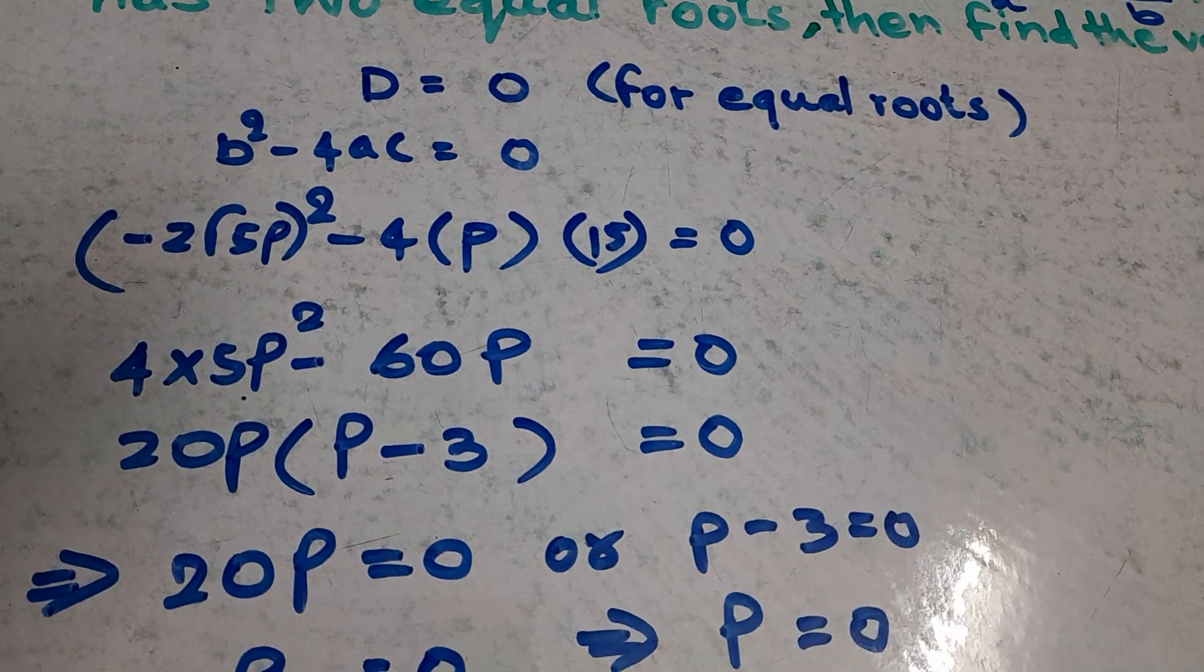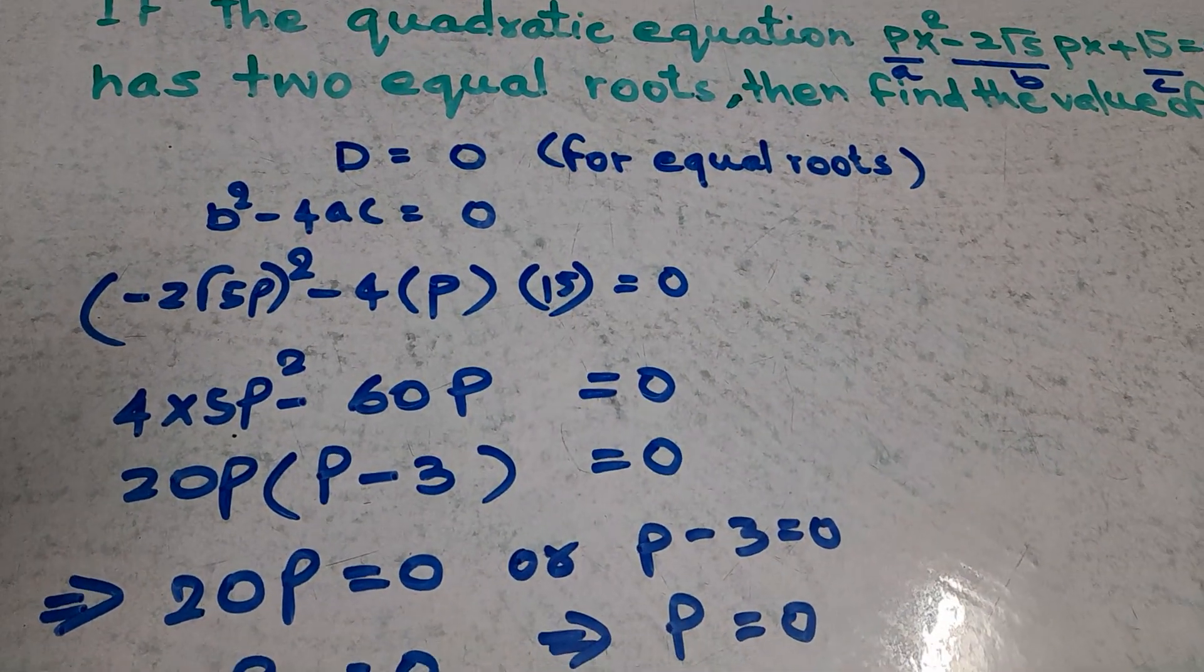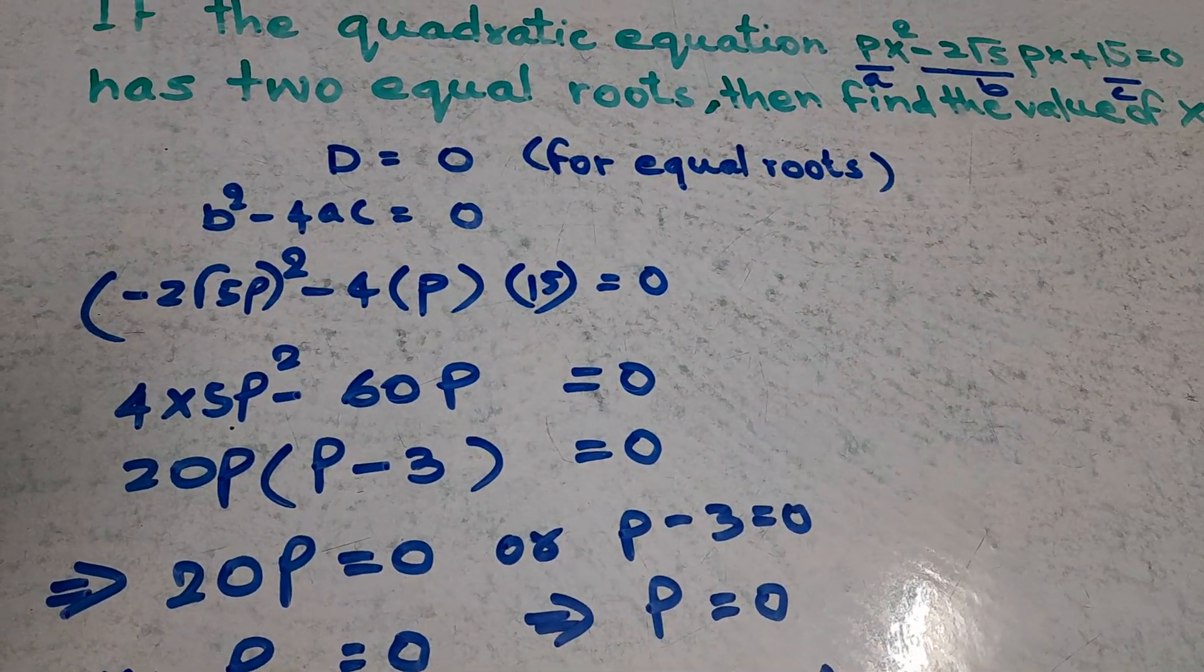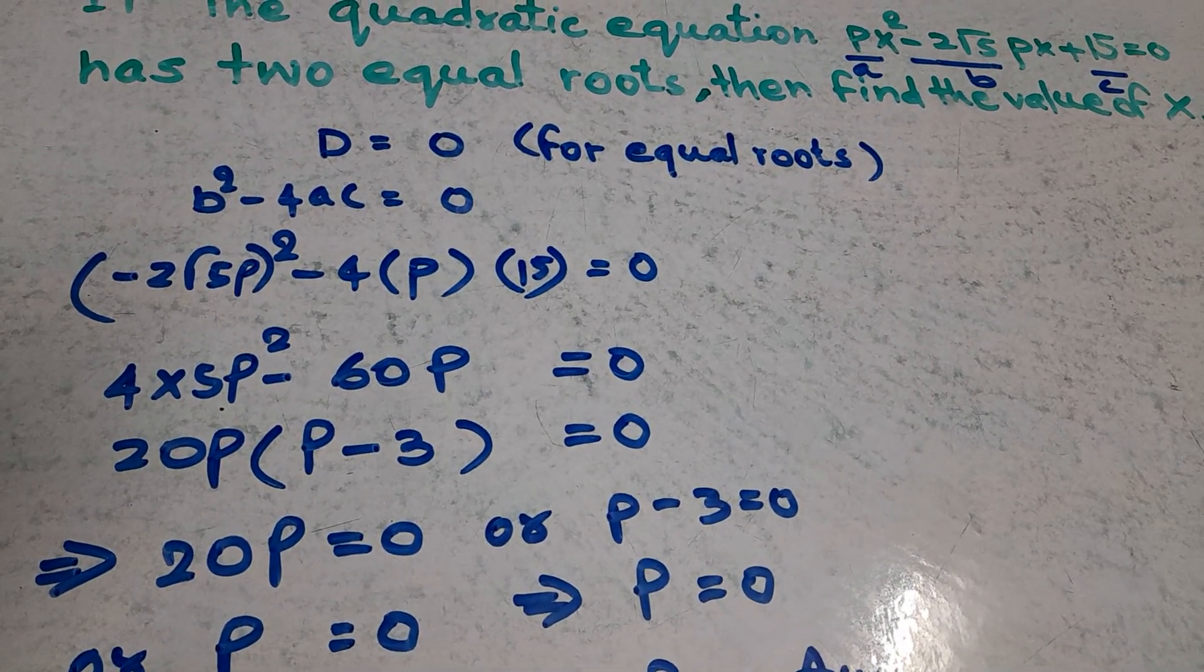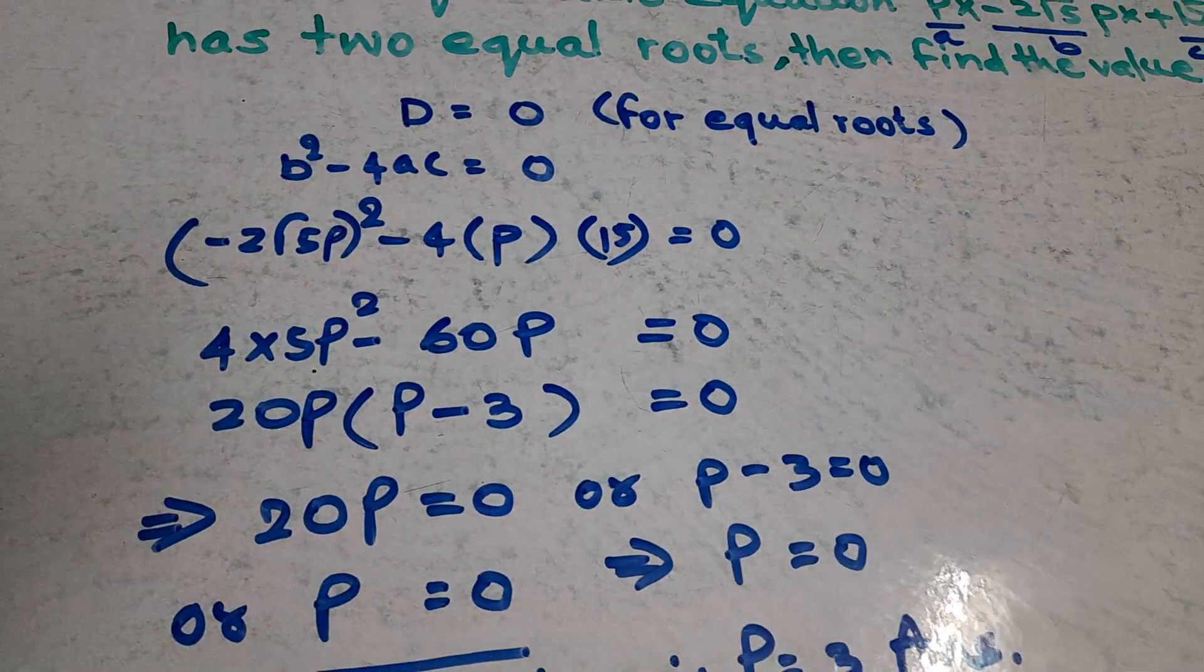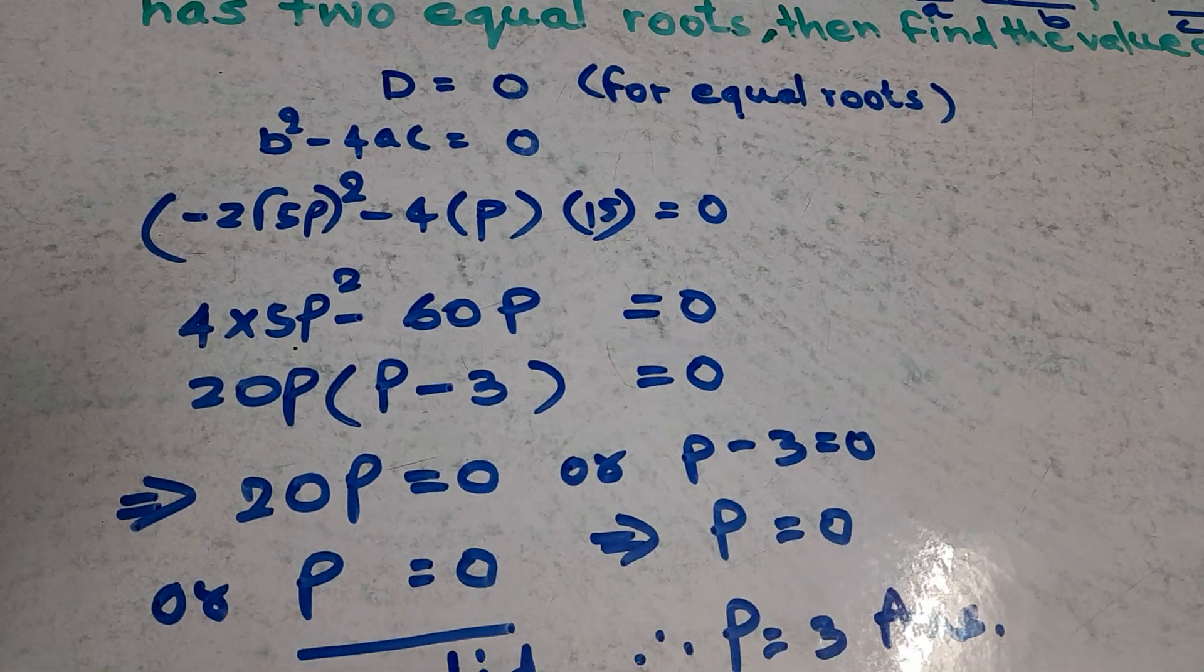So you put the values: A equals p, B equals minus 2 root 5p, and C equals 15. Putting the value of B: minus 2 root 5p whole squared minus 4p into 15 equals 0.